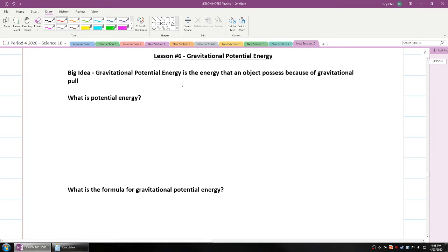The big idea here is that gravitational potential energy is the energy that an object possesses because of the gravitational pull that pulls it down. So it doesn't even have to be moving, because what is potential energy? Potential energy is the energy of an object at rest. And this is due to a couple things: its mass, gravity, and its position.